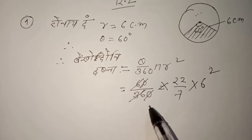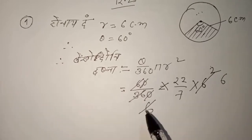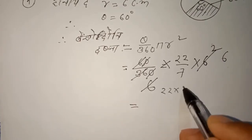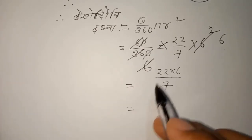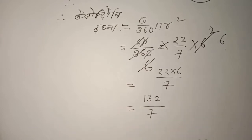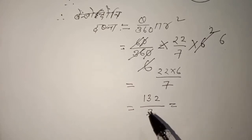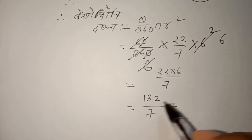Theta is 60 degrees, so that is 60 by 360, times 22 by 7, times 6 squared — that is 6 into 6. Cancelling, we get 42 by 7, which gives us 132 by 7. If we divide 42 by 7, this is 132 by 7.